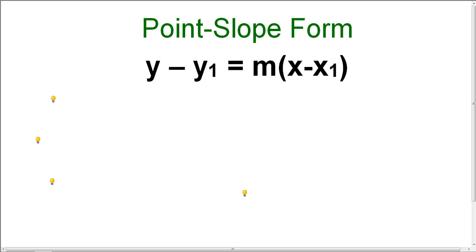So point-slope form looks like this: y minus y sub 1 equals m times the quantity x minus x sub 1. I know this looks a little confusing, but let's look at a color-coded form of this equation.